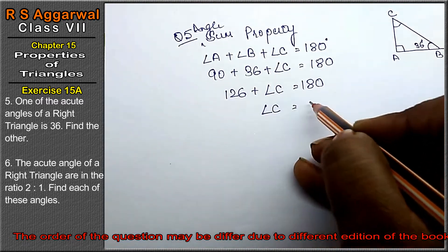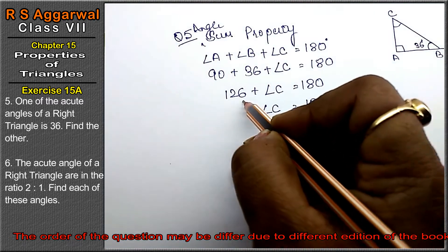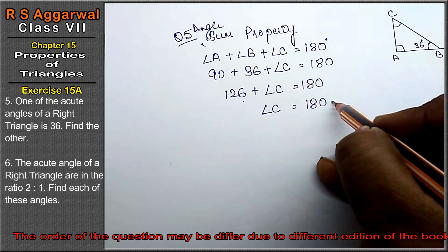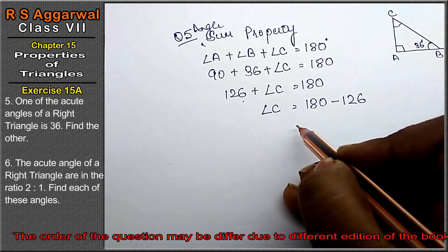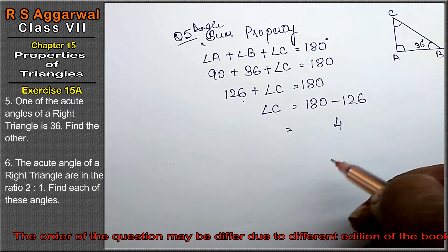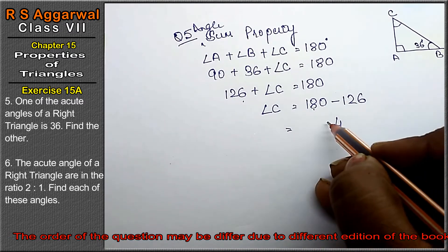What is angle C? 180 minus 126. How much is that? 180 minus 126 equals 54.